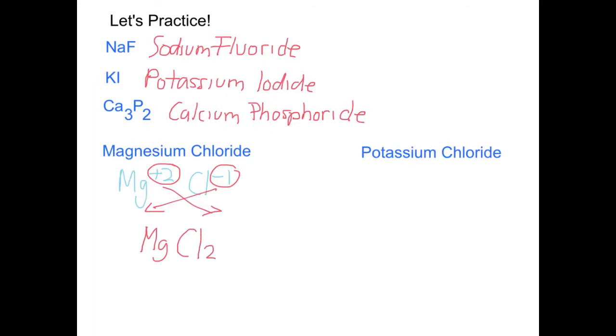Potassium has a positive charge and chloride has a negative charge. Circle, circle, crisscross, and your formula is KCl.